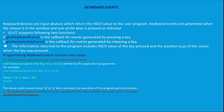The information passed to the program includes the ASCII value of the key pressed and the position (x, y) of the cursor when the key was pressed. Every character has an ASCII value — for example, the alphabet 'A' has ASCII value 65. When you press a key, its ASCII value is passed to the CPU.